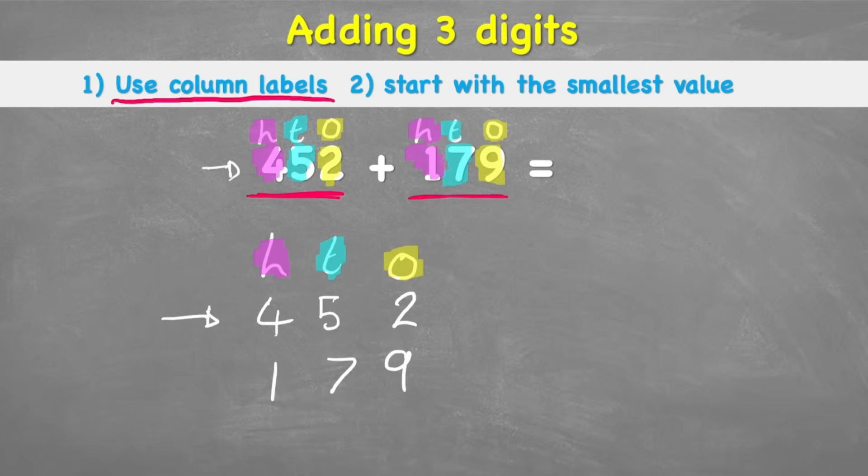Let's just check our numbers. 452, that's right. And 179, that's also right. But the beauty of the way we did it is we now know that these numbers are in the perfect columns. So let's put our equal sign and our plus sign. And now we're ready to begin.